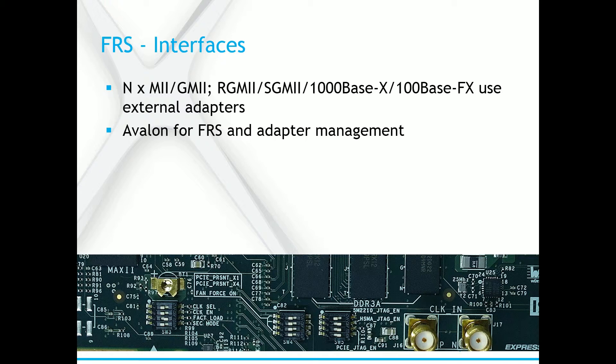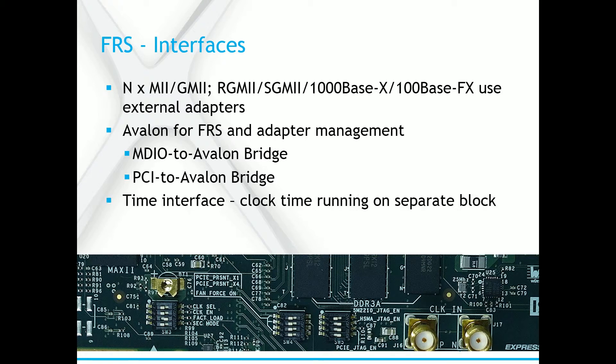FRS is controlled and configured through registers, and the statuses can be read the same way. The registers can be accessed through Avalon's switch matrix. We also have an adapter that connects the MDIO to Avalon, called MDIO to Avalon Bridge. If you want to control FRS through MDIO, you should use the MDIO to Avalon Bridge. Because MDIO is quite slow, we do not recommend using it in new designs. Instead, Avalon can also be accessed, for example, through PCI to Avalon or PCI Express to Avalon Bridge. The time interface of FRS is meant for sharing clock time information between FPGA blocks, for example the clock on FRTC, the Flexible Real-Time Clock. On top of this, there are naturally also the clock and reset interfaces.